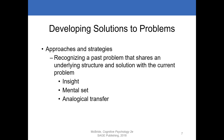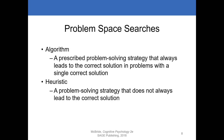Another concept is mental set — similar to functional fixedness — where we tend to use the same set of solutions for a similar problem, even if simpler solutions exist. We get stuck in the same mental set. Finally, analogical transfer is using the same solution for two problems that share an underlying structure. These are all approaches we try, whether consciously or unconsciously.